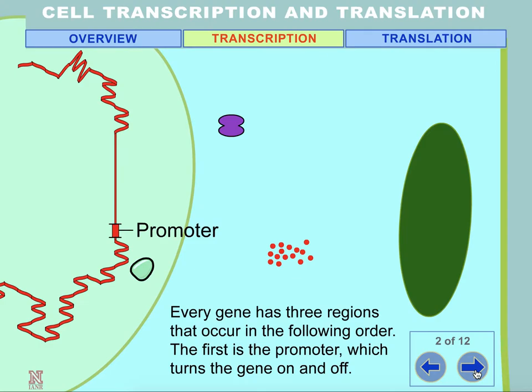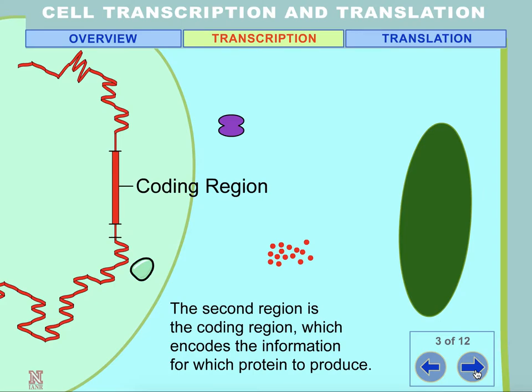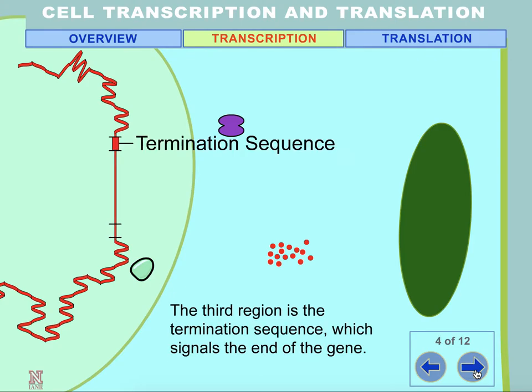Every gene has three regions that occur in the following order. The first is the promoter, which turns the gene on and off. The second region is the coding region, which encodes the information for which protein to produce. The third region is the termination sequence, which signals the end of the gene.